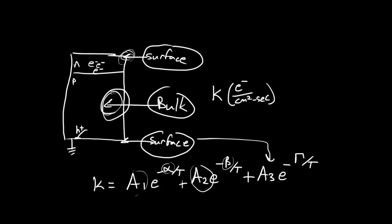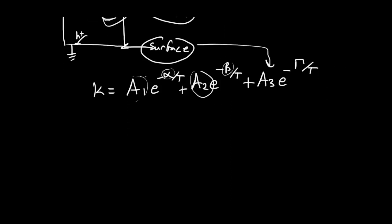You'll usually see when you look at dark current, they'll only give one of these terms. They'll only give just, you'll have this. And what they're usually assuming is that you're either bulk-dominated or surface-dominated. If you're surface-dominated, they're assuming it's one of the two surfaces.